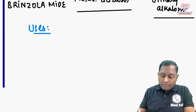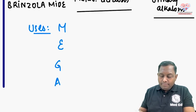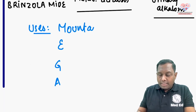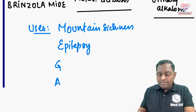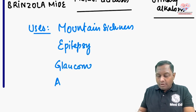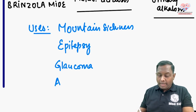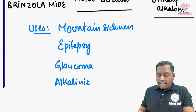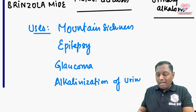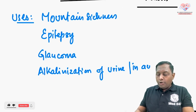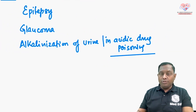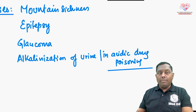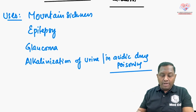The uses of carbonic anhydrase inhibitors can be remembered by the mnemonic MEGA: Mountain sickness, Epilepsy (like catamenial epilepsy), Glaucoma (dorzolamide is preferred for pediatric glaucoma), and Alkalinization of urine. Alkalinization of urine is mainly required in acidic drug poisoning, where forced alkaline diuresis using sodium bicarbonate is done, though carbonic anhydrase inhibitors can also be used.